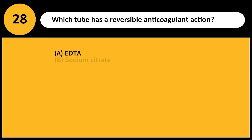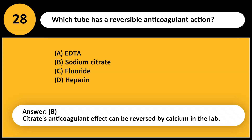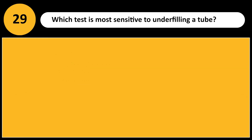Which tube has a reversible anticoagulant action? A. EDTA. B. Sodium citrate. C. Fluoride. D. Heparin. Answer: B. Citrate's anticoagulant effect can be reversed by calcium in the lab.